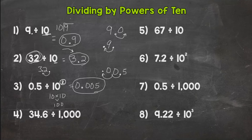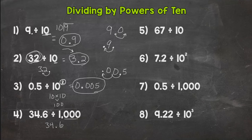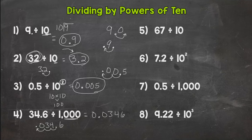Number 4: 34 and 6 tenths divided by 1,000. So we're taking 34 and 6 tenths — the nearest whole number would be 34 — and splitting it into 1,000 pieces, so our answer is going to be fairly small. Three zeros means to move the decimal three times. We move it 1, 2, 3 times to the left, fill with a placeholder 0, and we get 346 ten-thousandths.